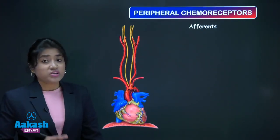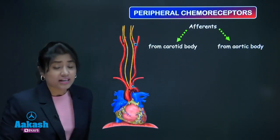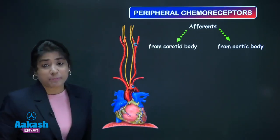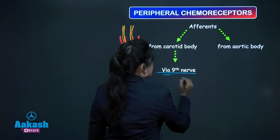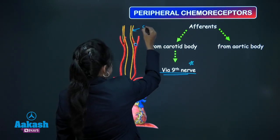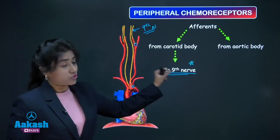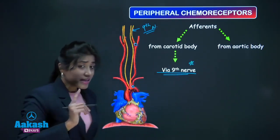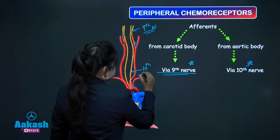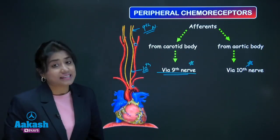Afferents from the carotid body are carried by the ninth nerve, the glossopharyngeal nerve. Afferents from the aortic body are carried by the tenth nerve, the vagus nerve. So from the aortic body it is the tenth nerve, while from the carotid body it is the ninth nerve.